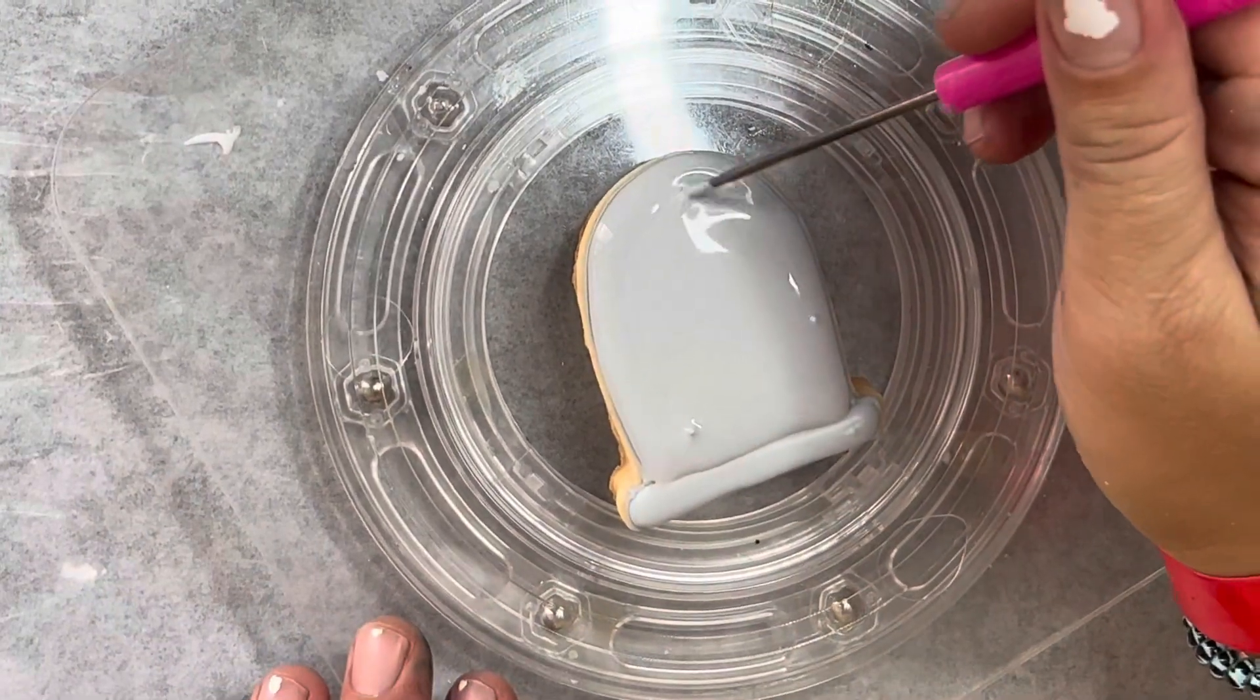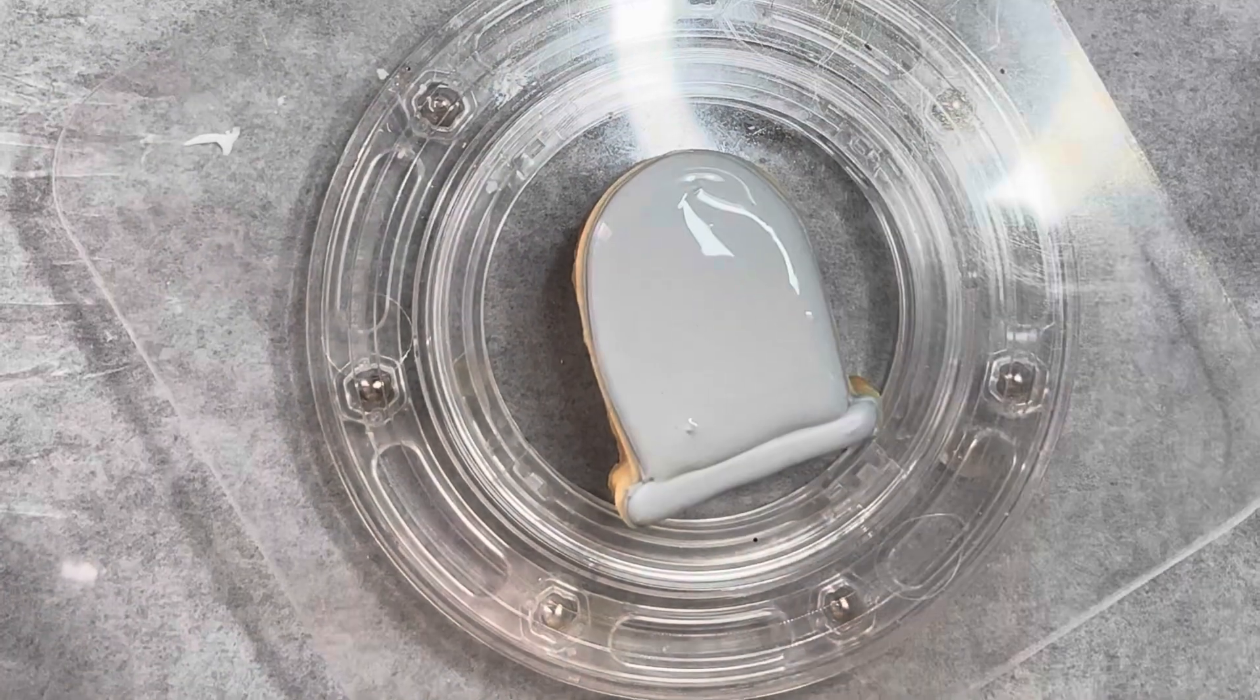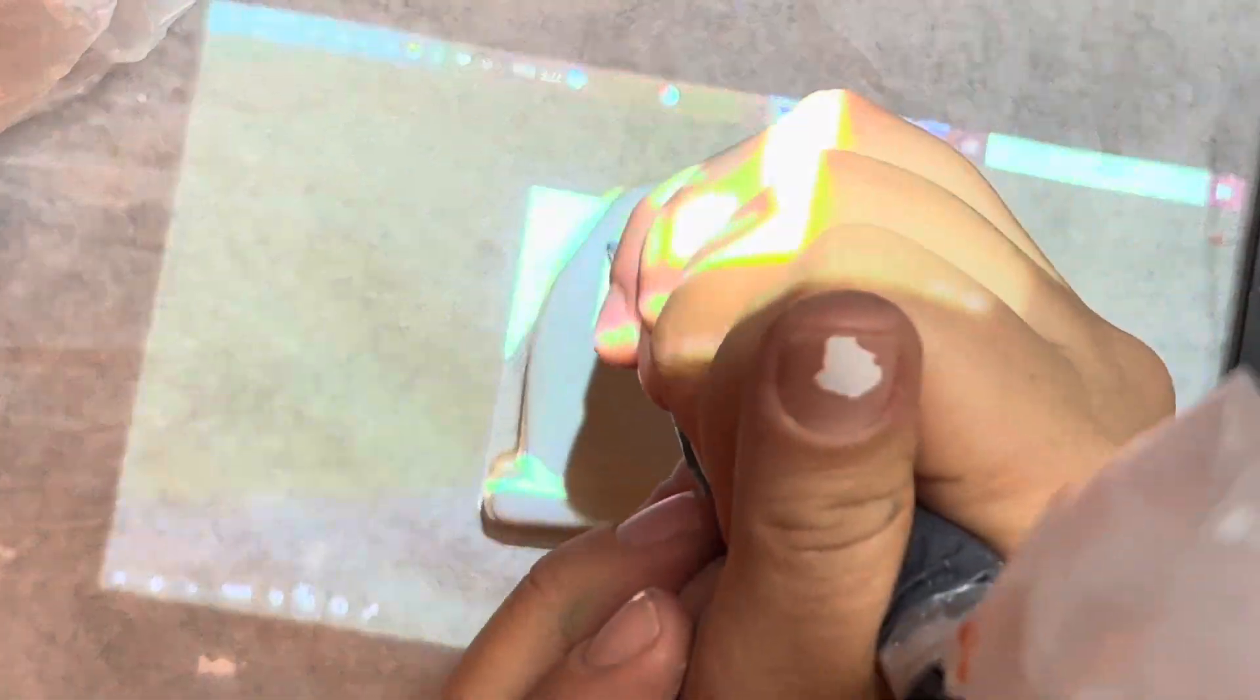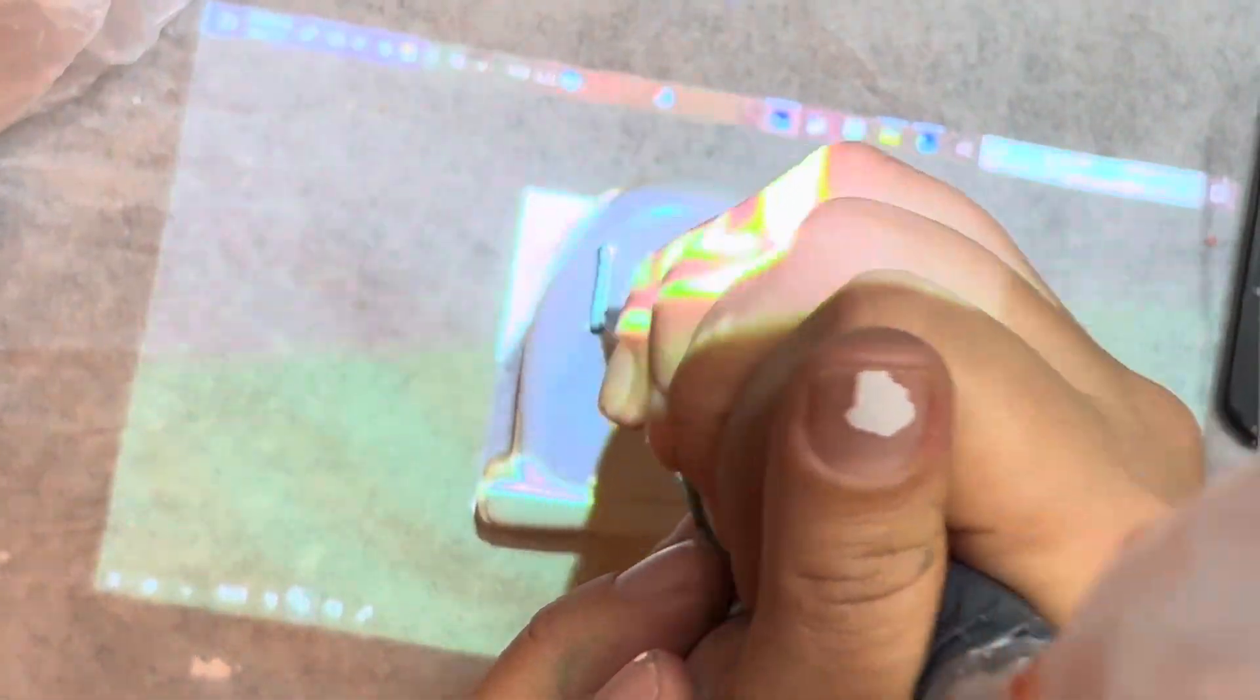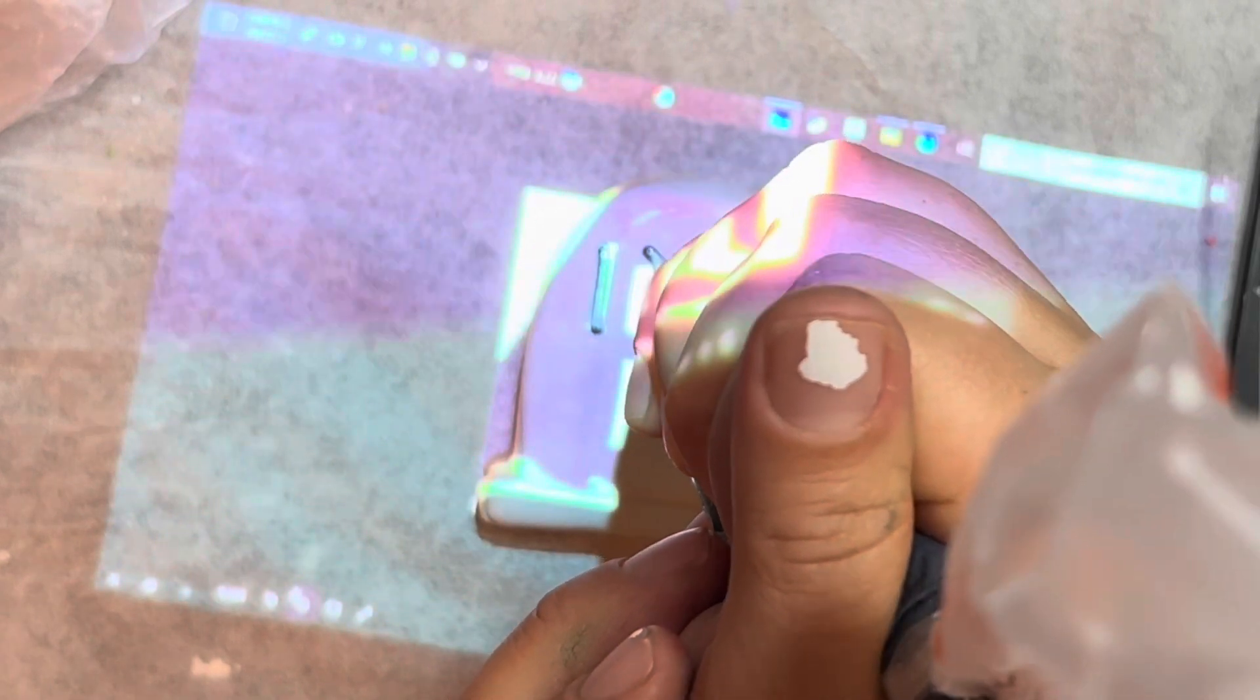And then I'm going to come back and I have some piping consistency black icing and we're going to write on it. So I'm using my projector, my favorite tool, and I'm just writing on this cookie and it says 'I do.'